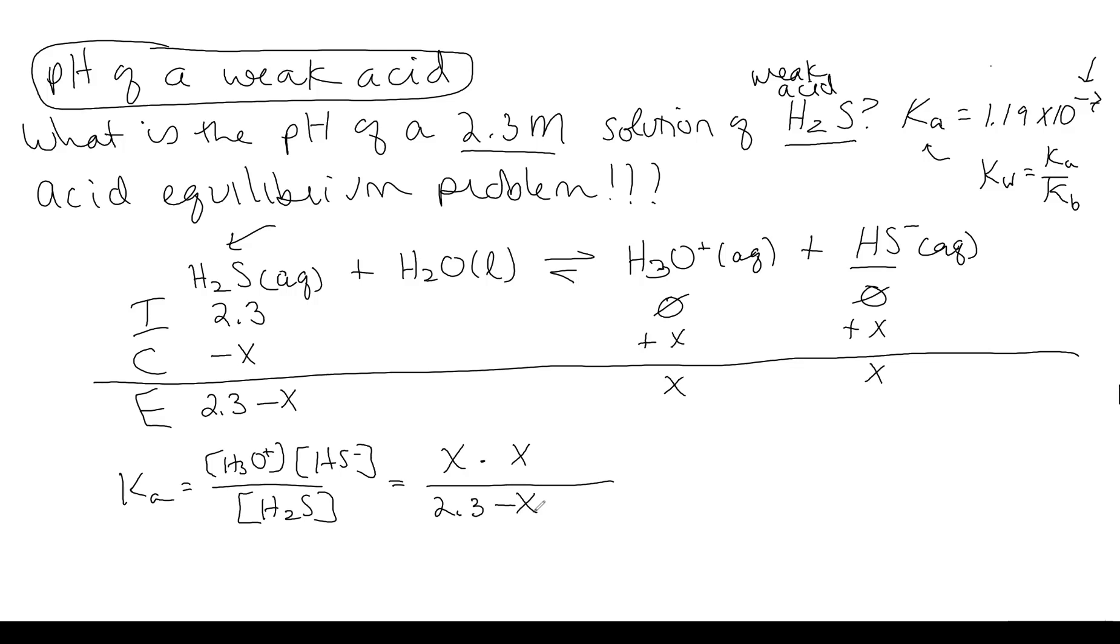And so now we're going to fill in our values from the table. So it's going to be X times X over 2.3 minus X. And then we just need to set that equal to the Ka value that we were given. So 1.19 times 10 to the negative 7. And that's going to be equal to X squared over 2.3 minus X. Now, there's another thing we can do here. And this is going to help simplify our math as we're solving this.